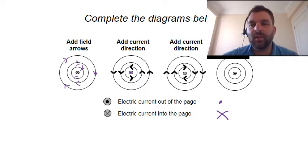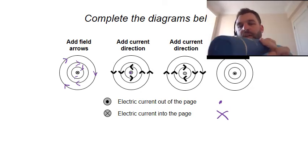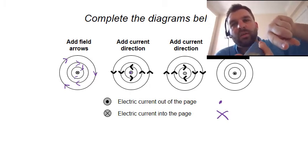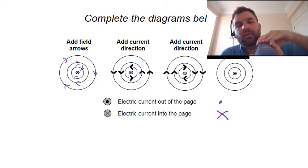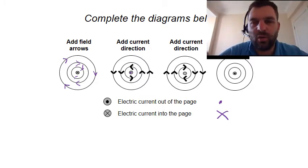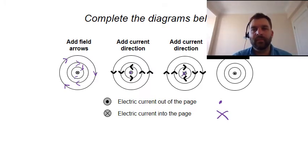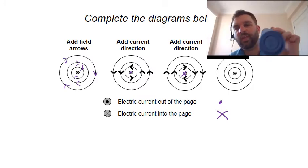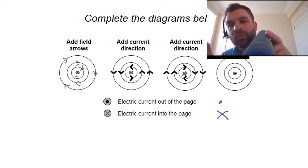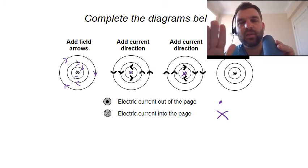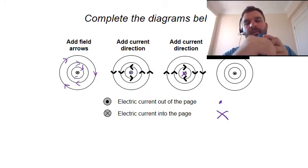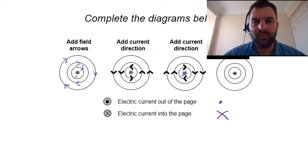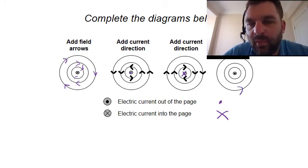The third example: you're told the magnetic field direction must be clockwise, so it means the current must be going away from you — it's a cross. And the final example: the current is coming towards you, so it must be going anti-clockwise — the opposite direction of the first example.